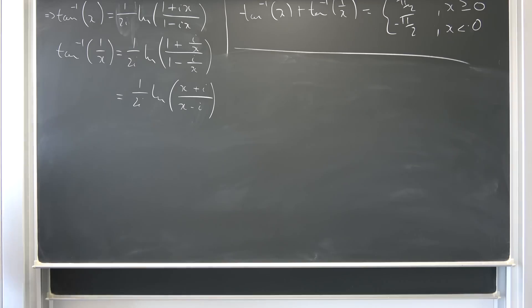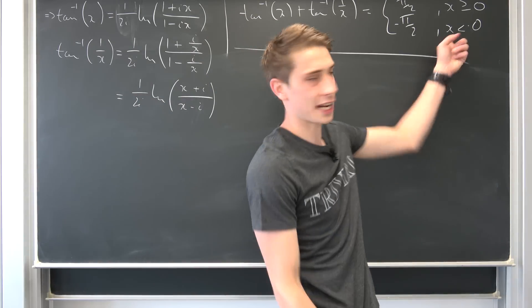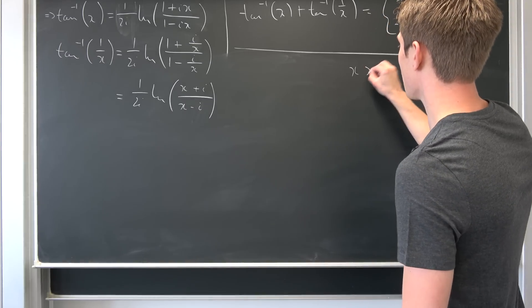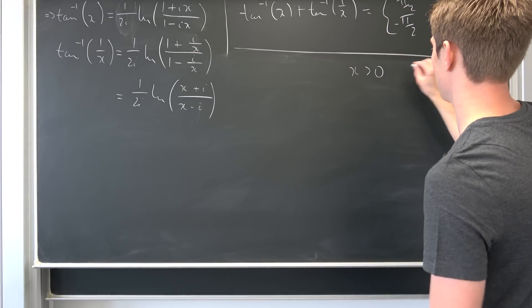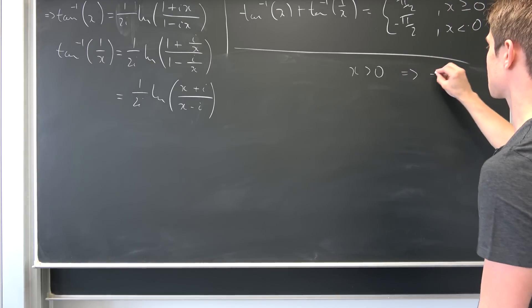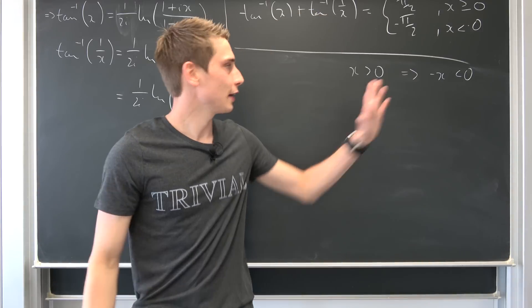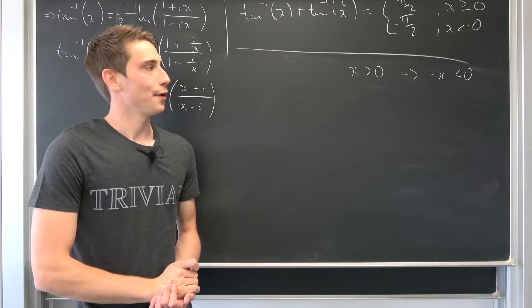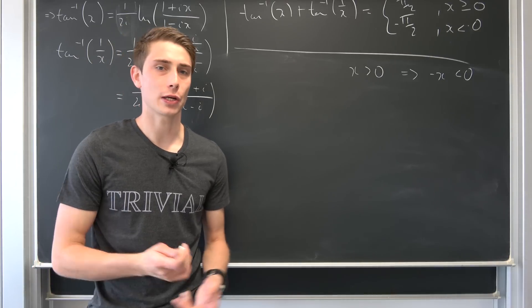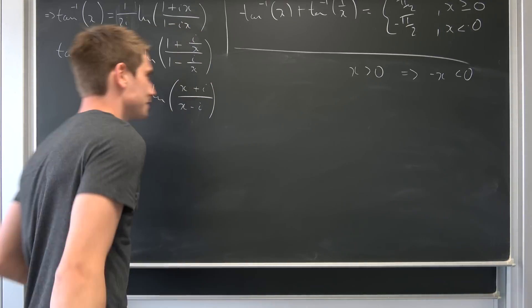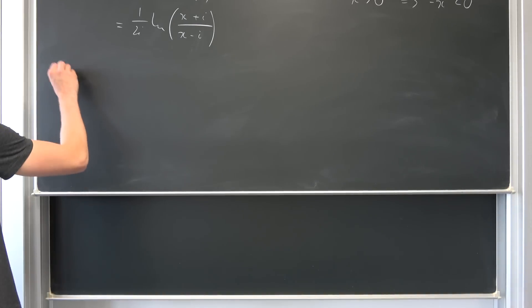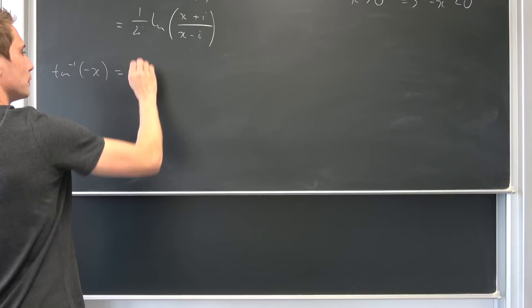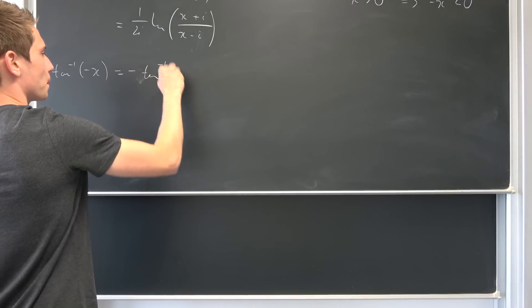Now for the next case, x < 0. This is actually quite easy. I'd like to derive the identity that arctan(−x) = −arctan(x). If we can use that, we just take our result from before, bring the negative out, and end up with −π/2.